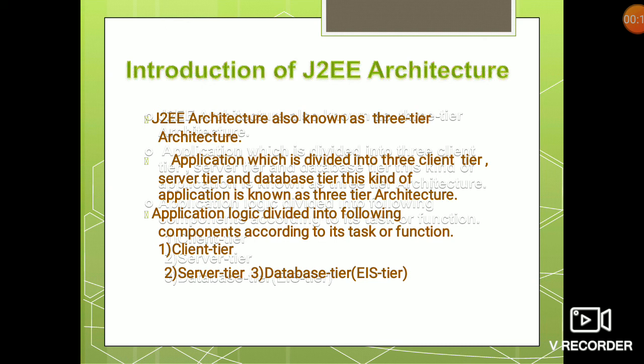The client tier holds the logic of how the entire application can interact with the user, or how the user can interact with the entire system. The server tier consists of the main logic of how the entire application works, and the database tier holds the logic of how data should be fetched and displayed to the user.